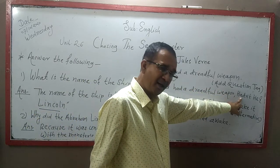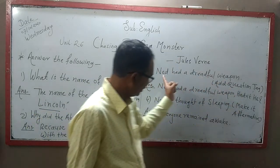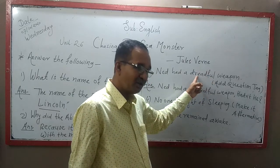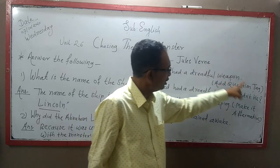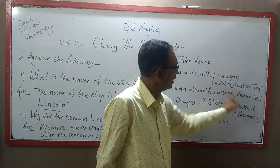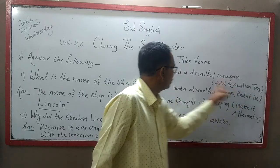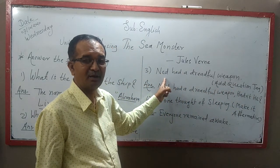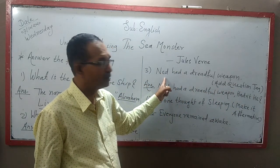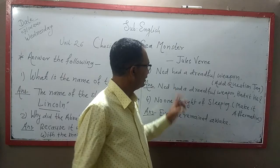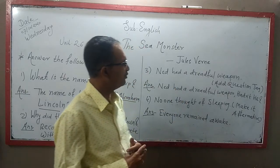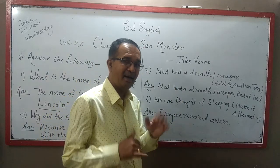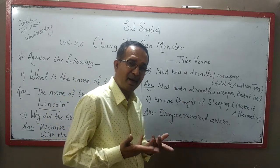Since this sentence is affirmative, when the sentence is affirmative you add 'not' to form the question tag. So the question tag becomes 'hadn't he' — 'he' referring to Ned. The full sentence with question tag is: 'Ned had a dreadful weapon, hadn't he?'